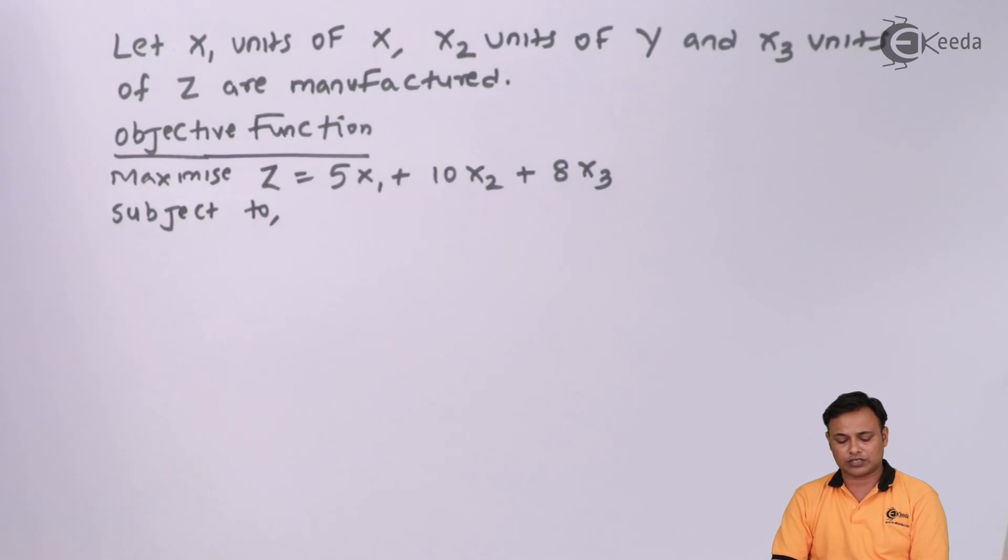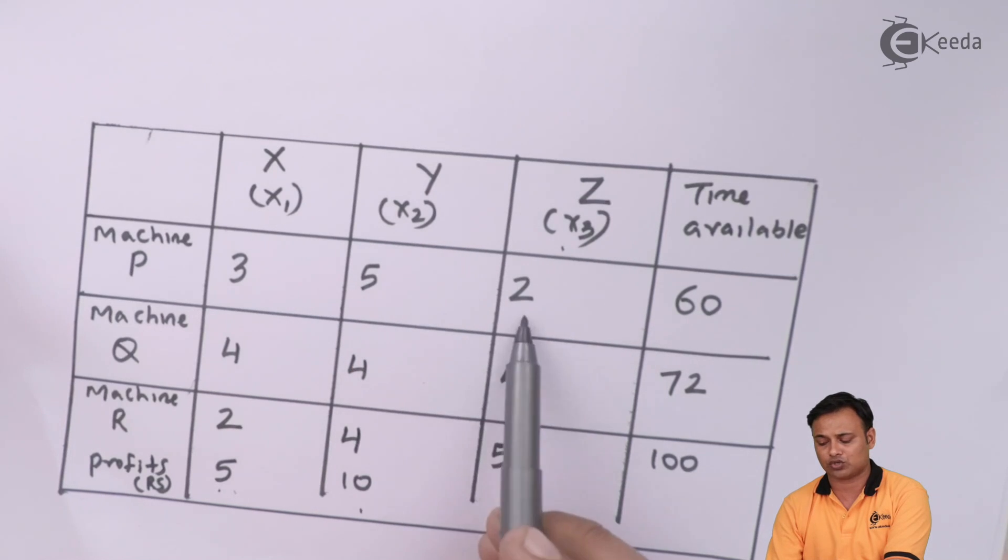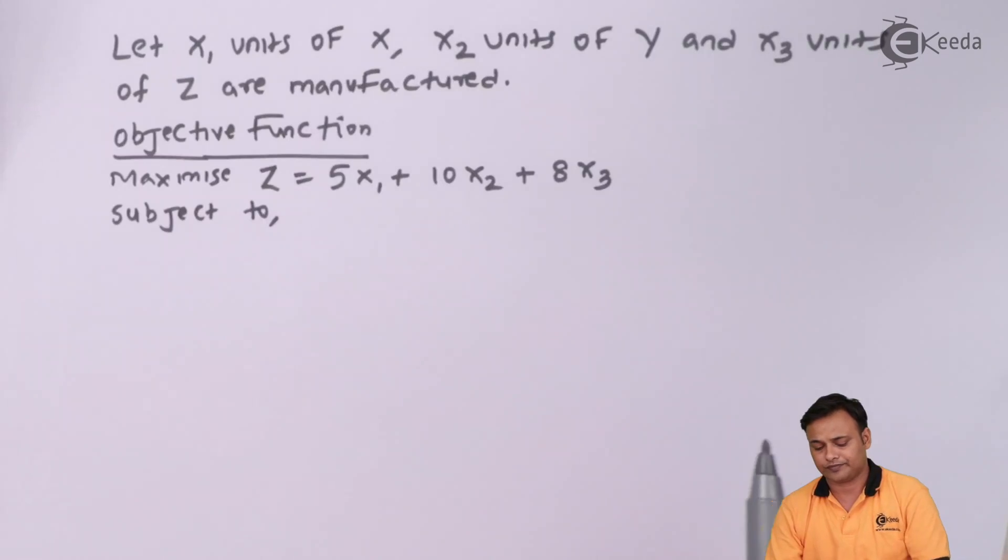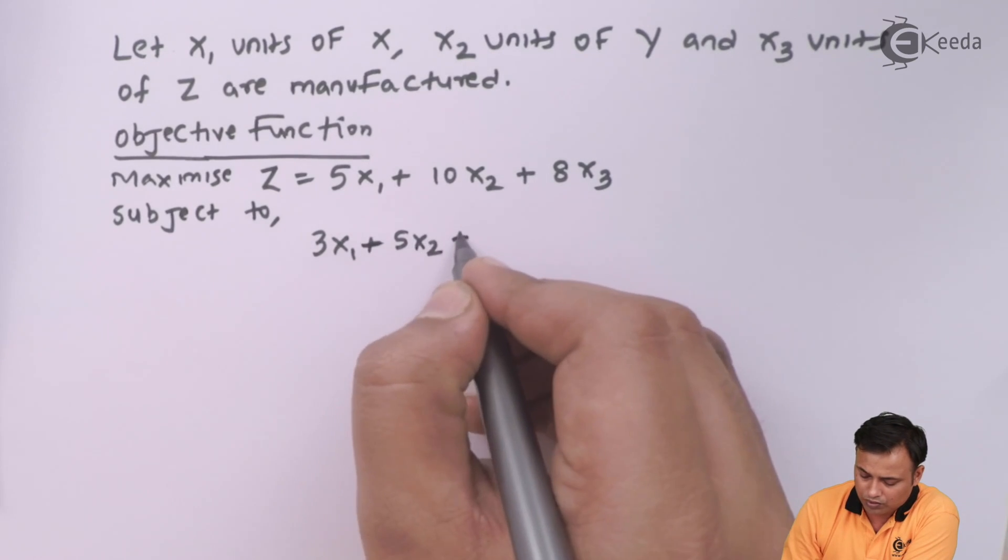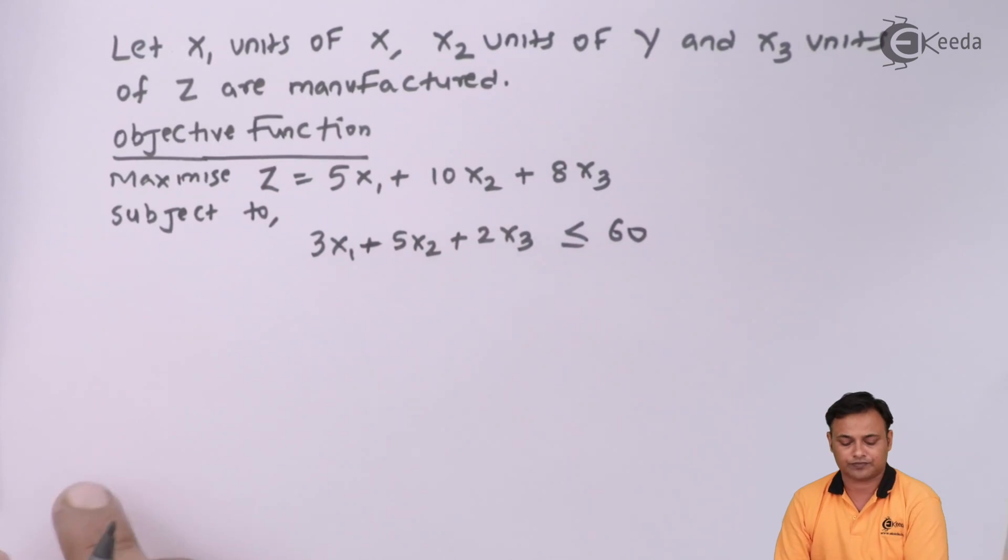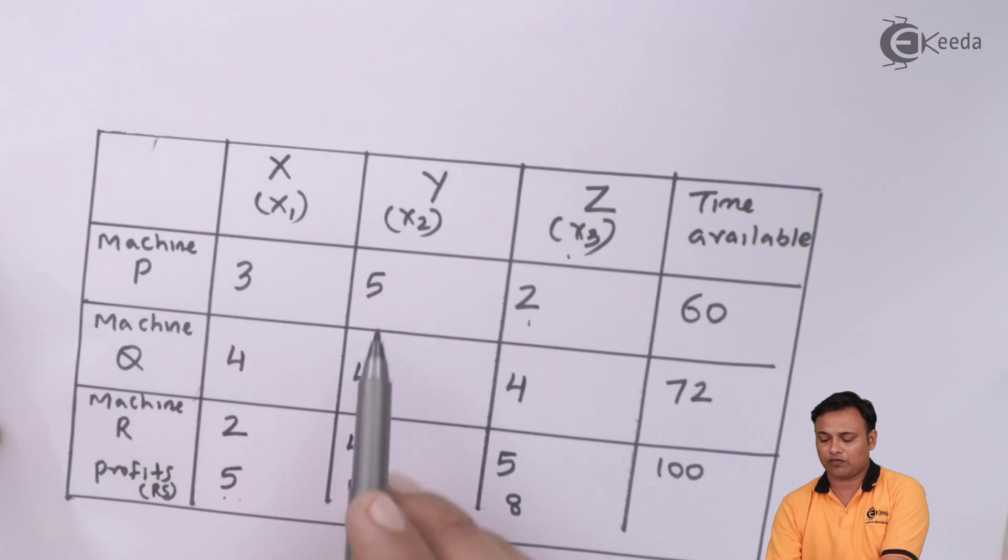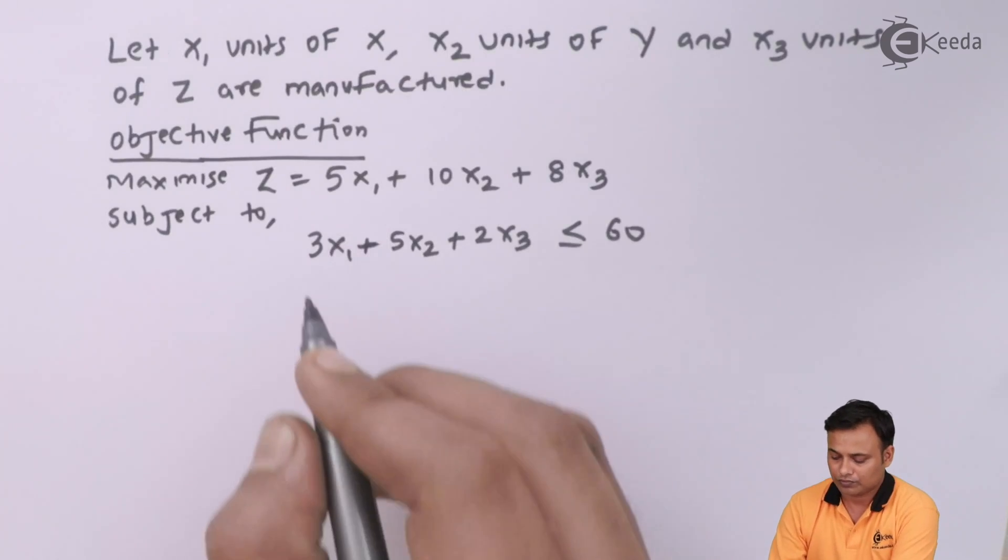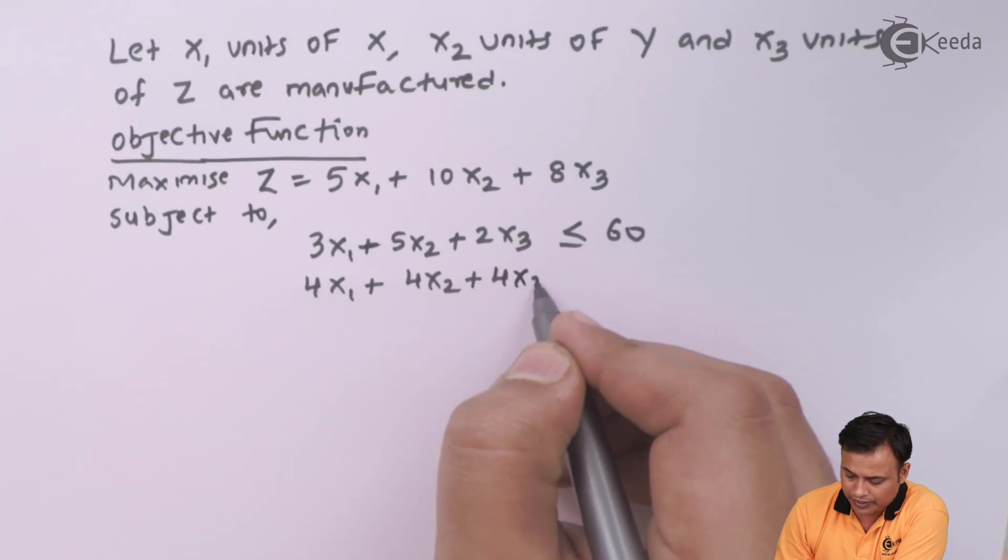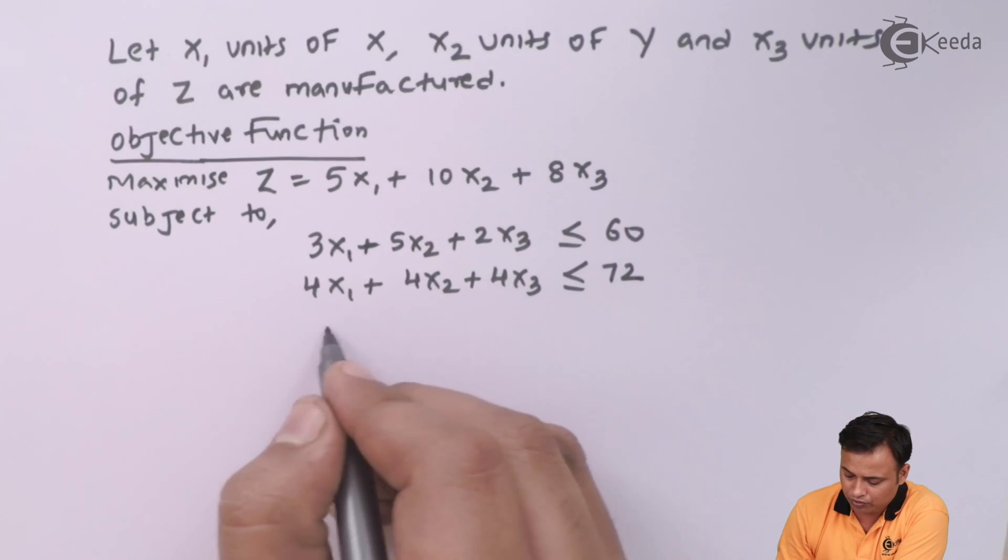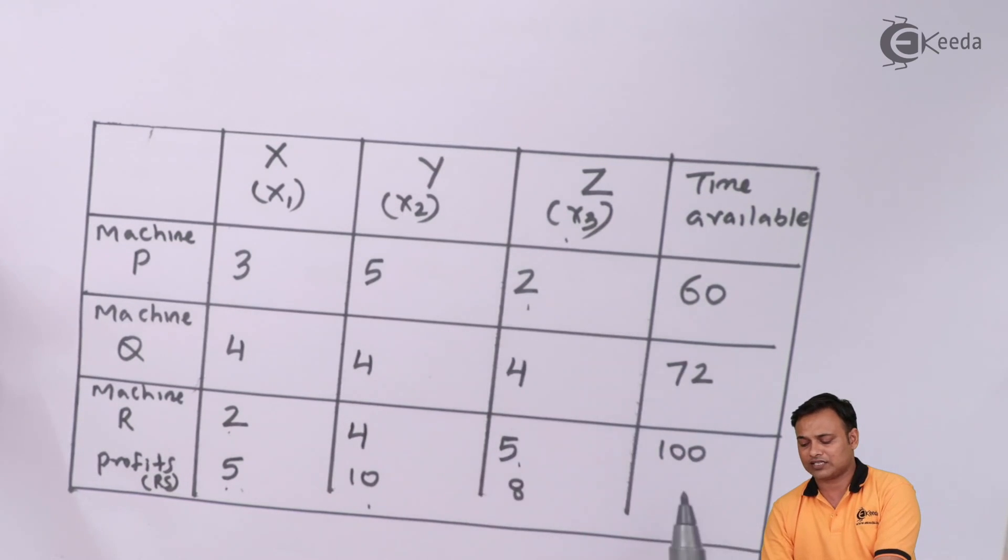I have got three constraints for three machines. For machine P it will be 3X1 plus 5X2 plus 2X3 less than equals to 60. For machine Q it will be 4X1 plus 4X2 plus 4X3 less than equal to 72. And for machine R it will be 2X1 plus 4X2 plus 5X3 less than equal to 100.